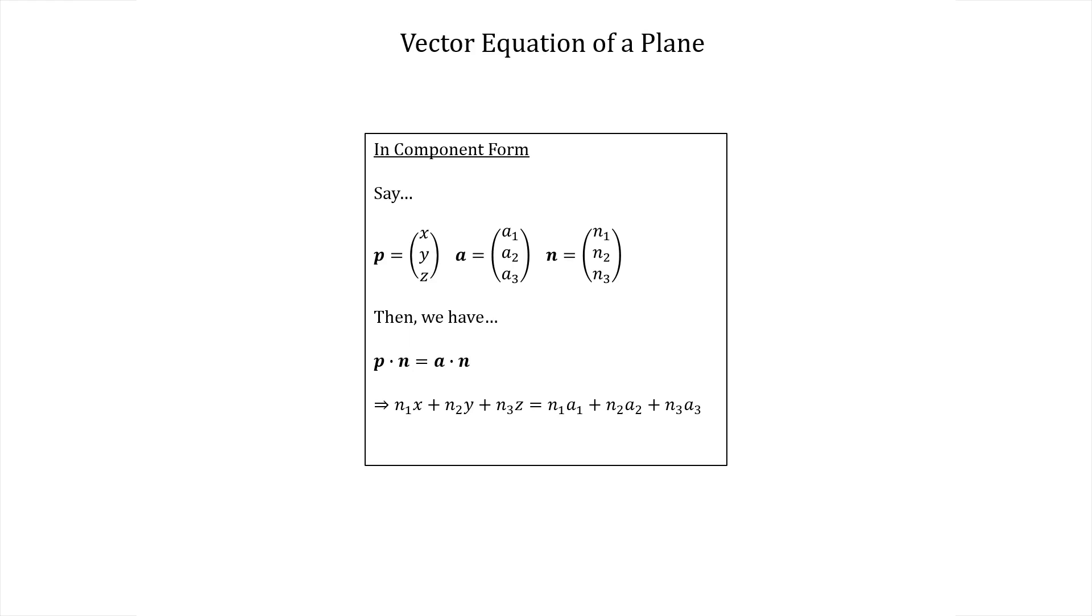But remember that the vectors n and a are specific fixed vectors so their components are constants. Hence the right hand side is a constant. Let's call it c.